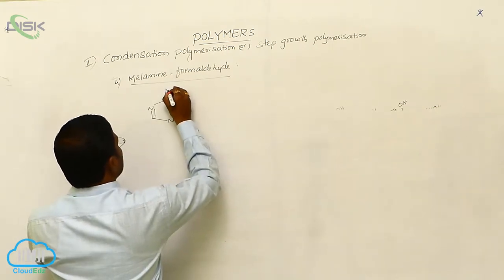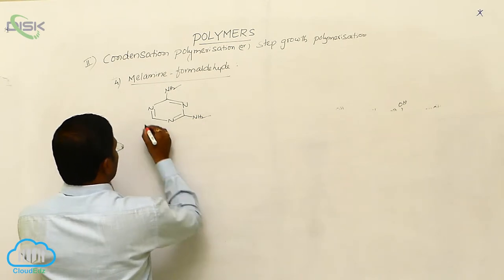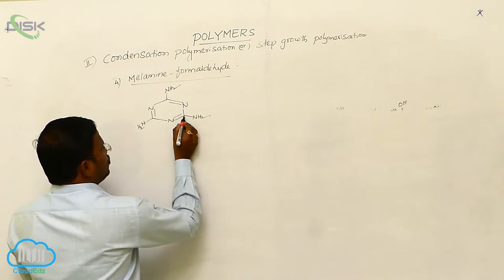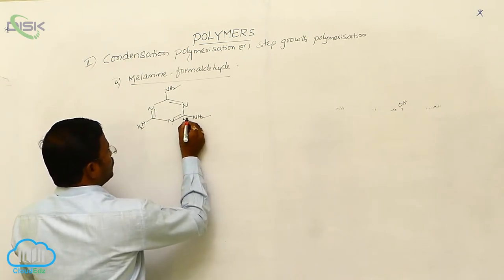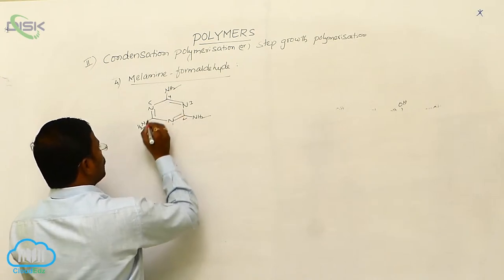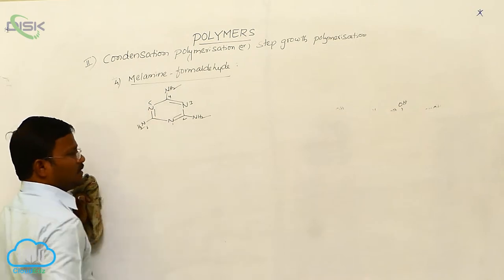Triazines consist of three amine functional groups. We can name this compound as 2,4,6-triamino-1,3,5-triazine.